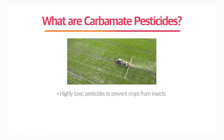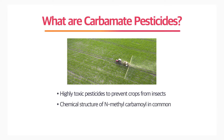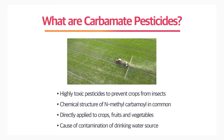What are carbamate pesticides? Carbamate pesticides are highly toxic and used to prevent crops from insects. They have a chemical structure of N-methylcarbamoyl in common. Because they are directly applied to crops, fruits, and vegetables, they can easily contaminate drinking water resources.